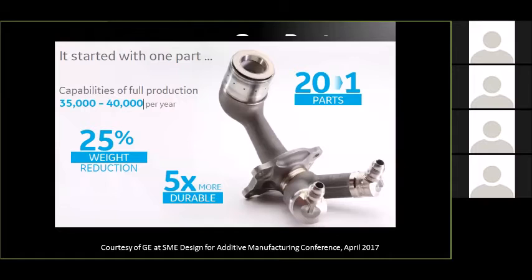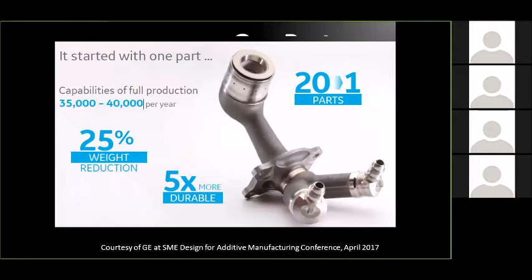You may have already seen this GE study — Project LEAP. They had an existing part that used to be 20 separate parts, and now they actually printed it as one. Great results: it's five times stronger and 25% lighter in weight, and they produce 40,000 of them. But then I turn around and ask my folks: what happened to the contracts associated with those 20 parts? When they start thinking about what happened to the conventional contracts, that's what gets their attention and makes them perk up.